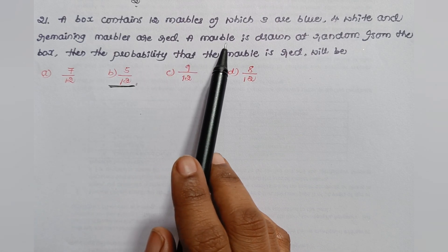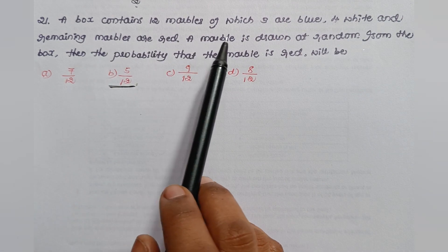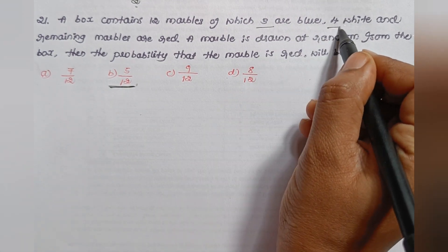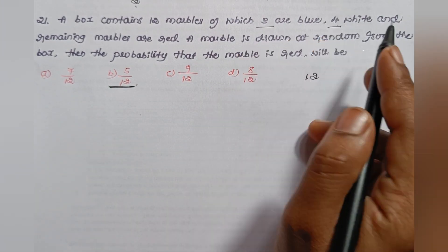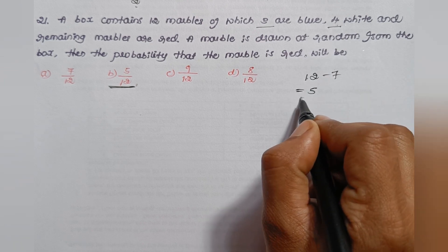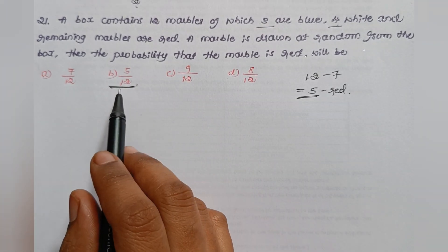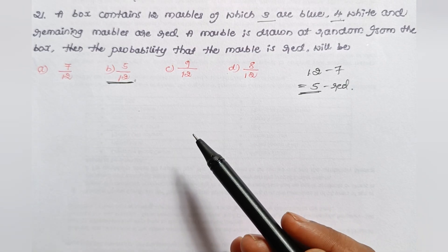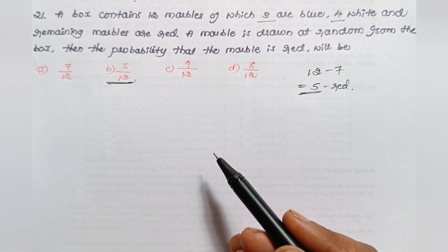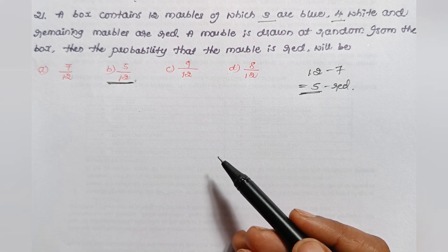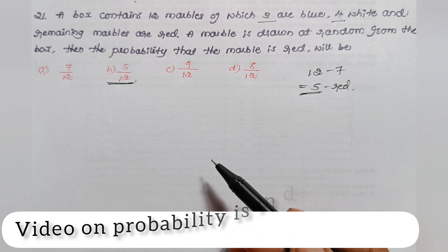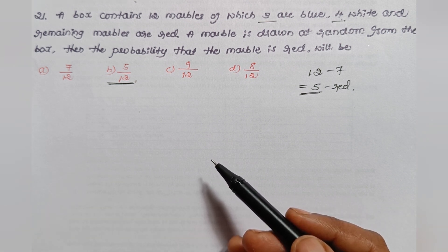A box contains 12 marbles: 3 are blue, 4 are white, and the remaining are red. A marble is drawn at random. What is the probability it is red? Red marbles = 12 − (3 + 4) = 5. So the probability is 5/12. This concludes the Karnataka TET 2022 questions. Thank you so much.